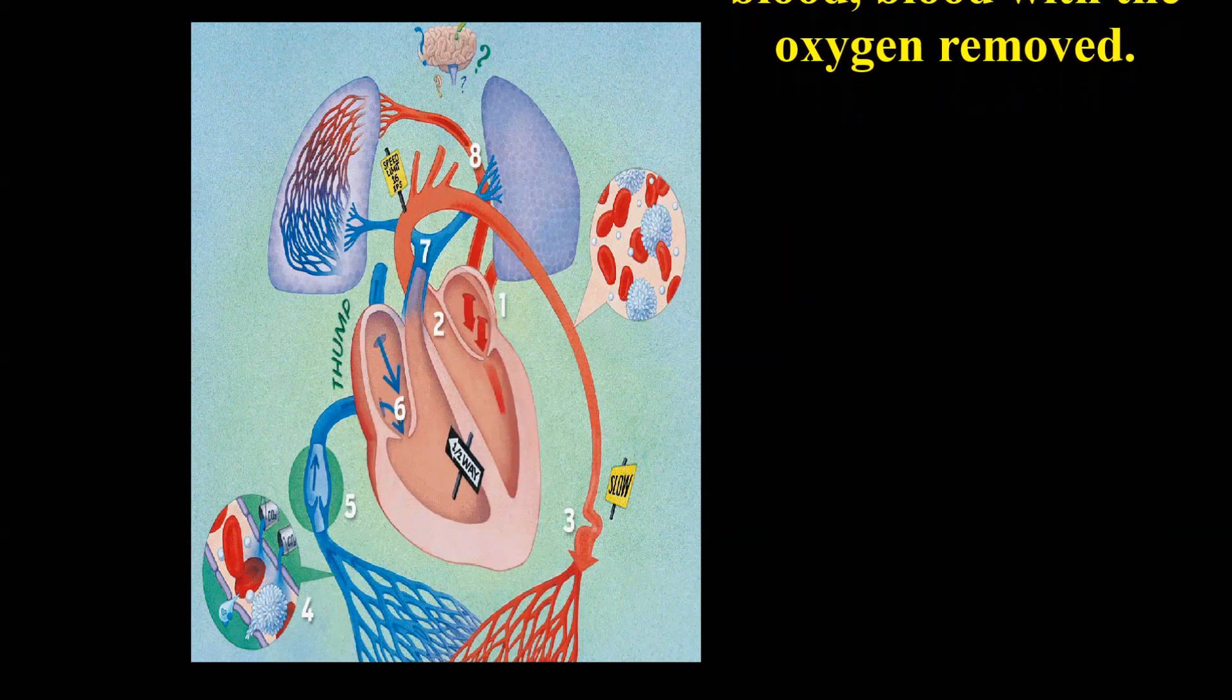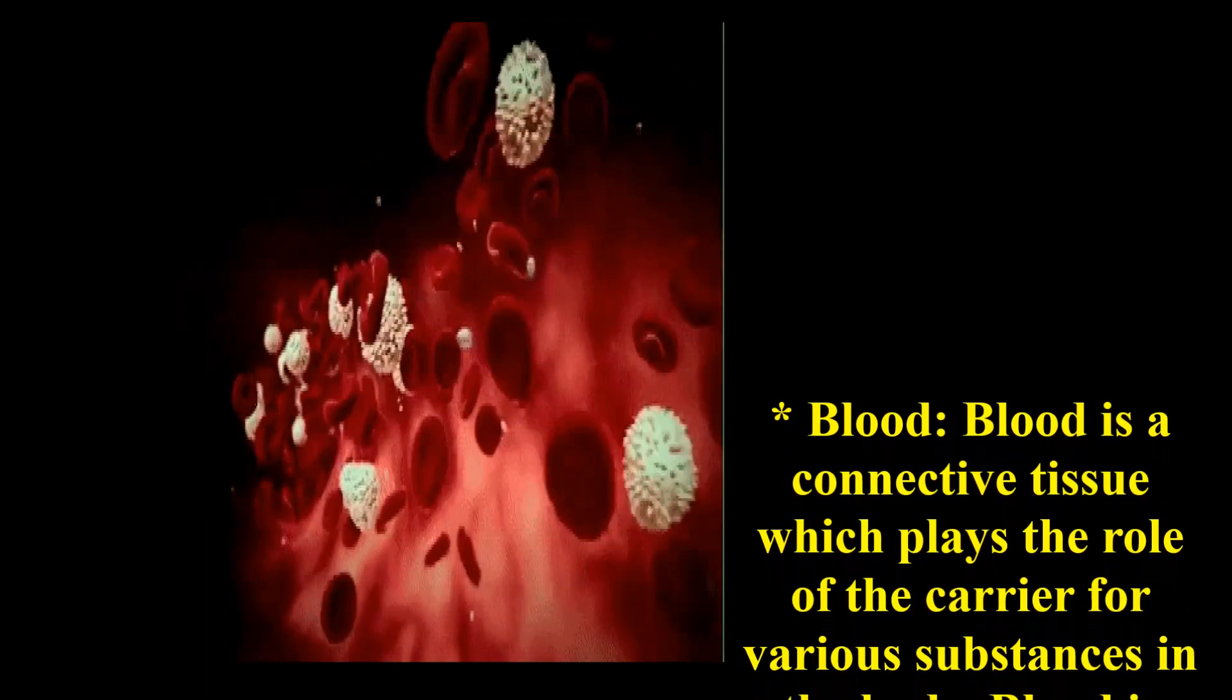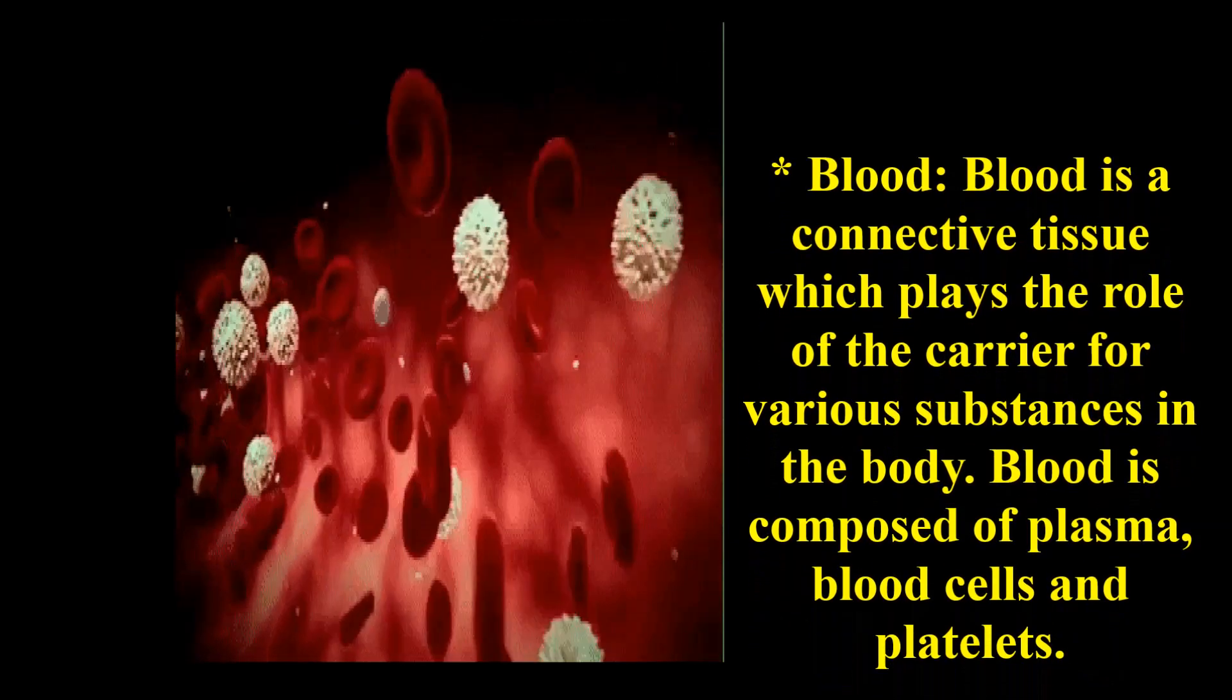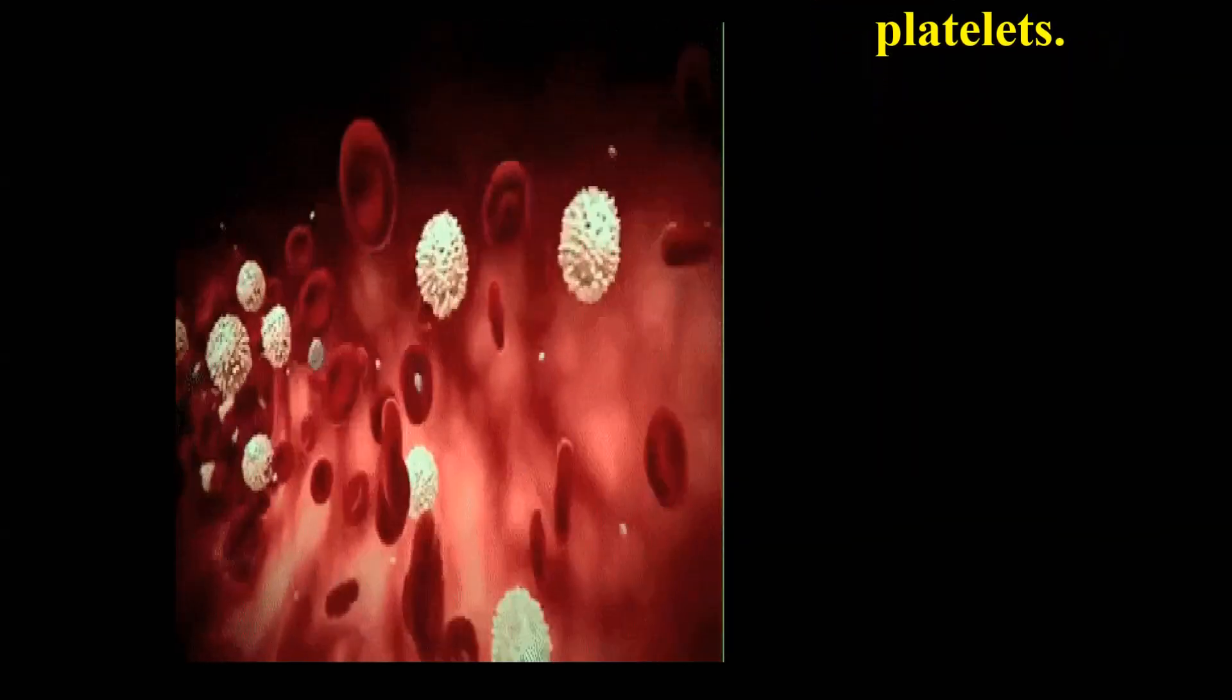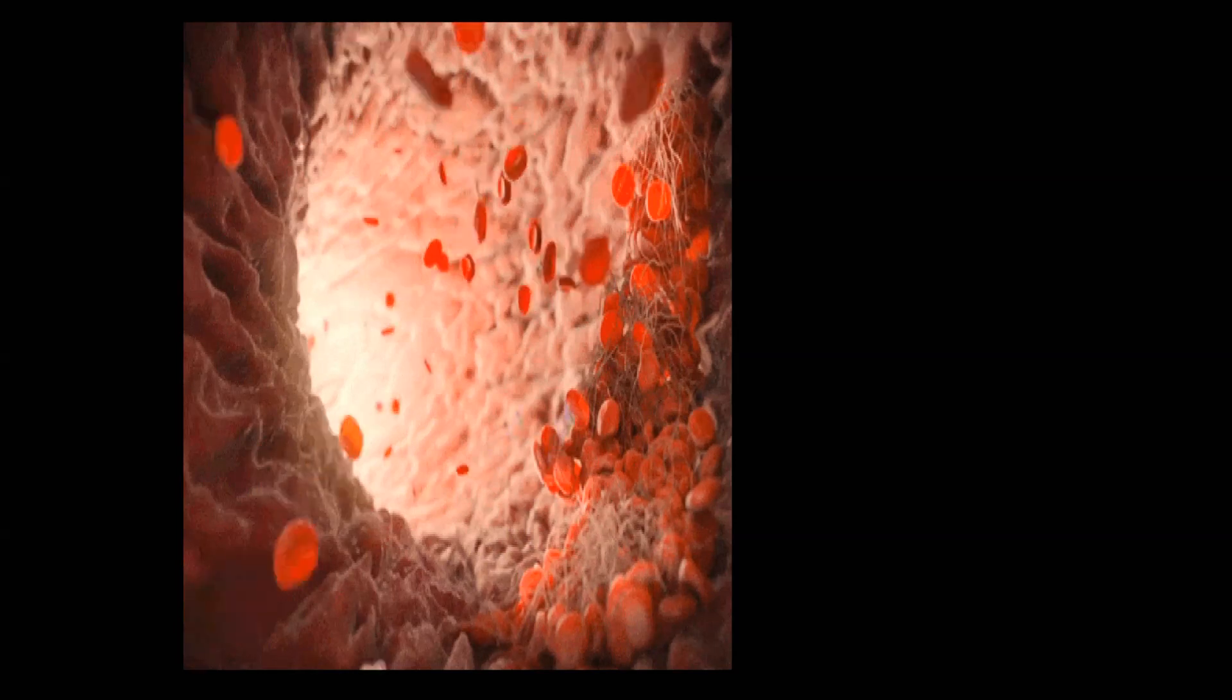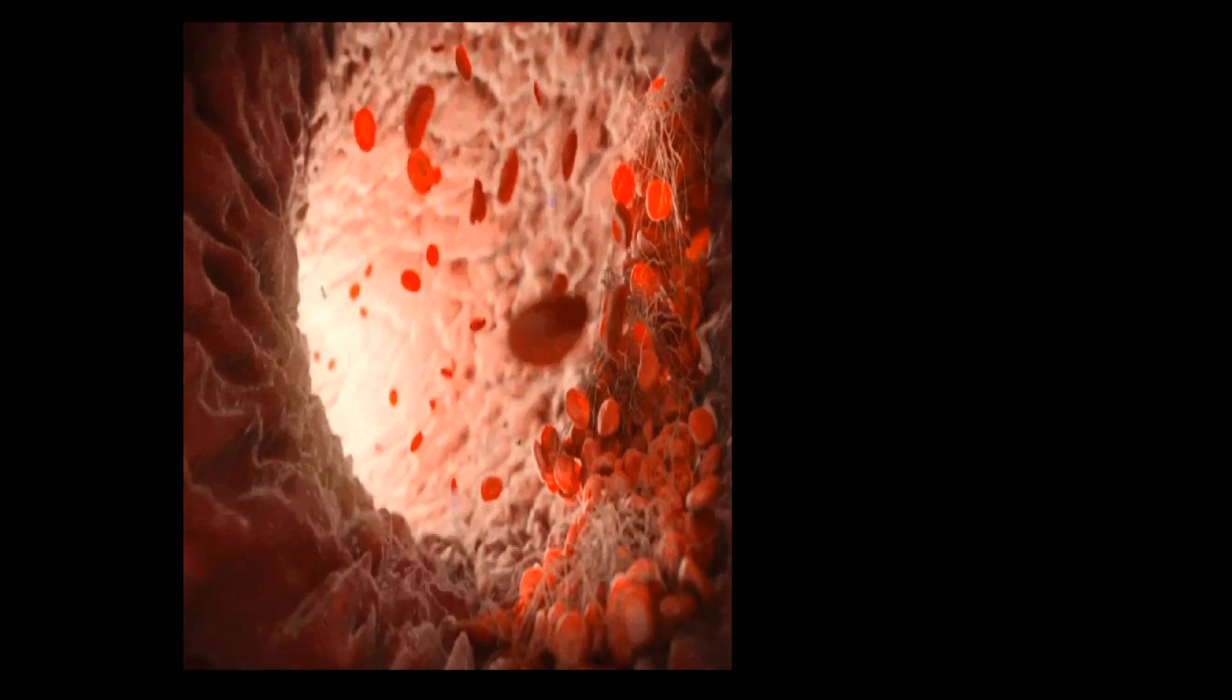Blood is a connective tissue which plays the role of the carrier for various substances in the body. Blood is composed of plasma, blood cells, and platelets. Blood plasma is a pale-colored liquid which is mostly composed of water and forms the matrix of blood.